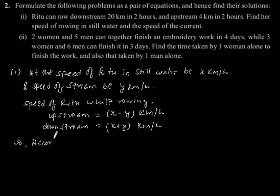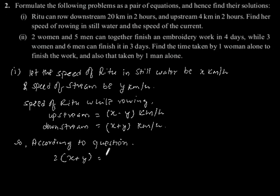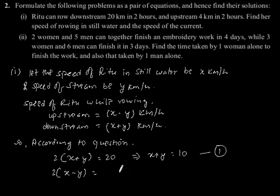According to the question, we have 2 times (x plus y) equals 20, which also implies x plus y equals 10 — let's say this is equation 1. And 2 times (x minus y) equals 4, which implies x minus y equals 2 — let's say this is equation 2.